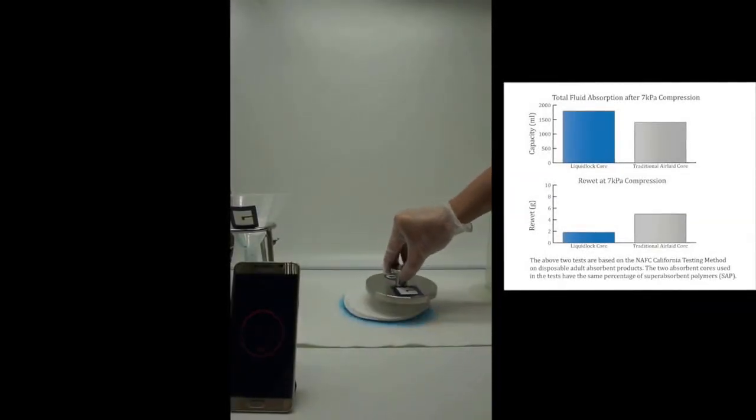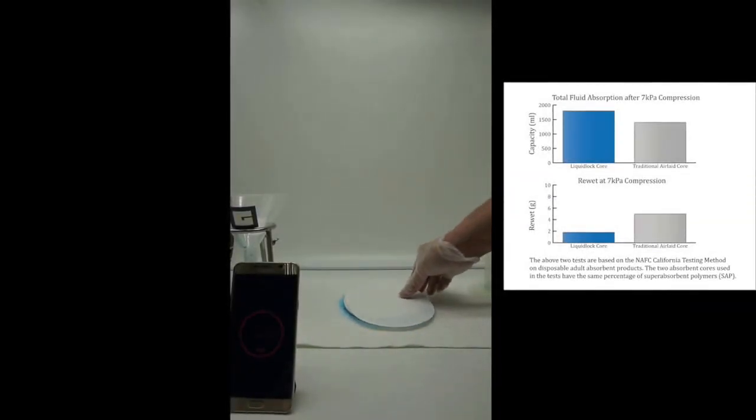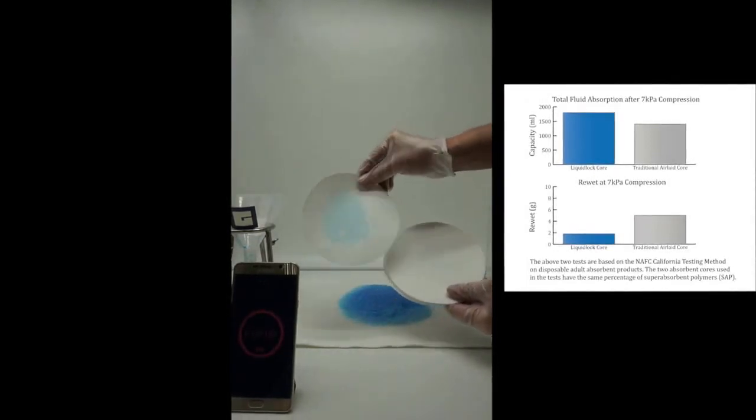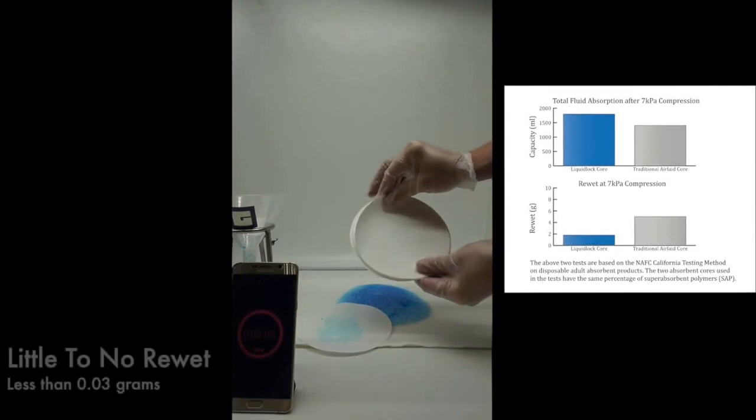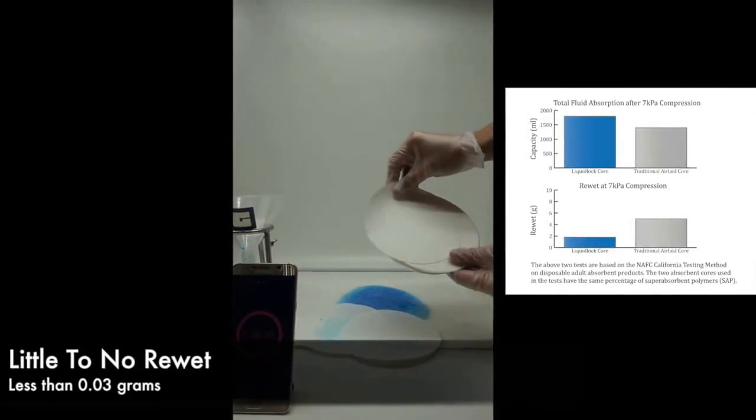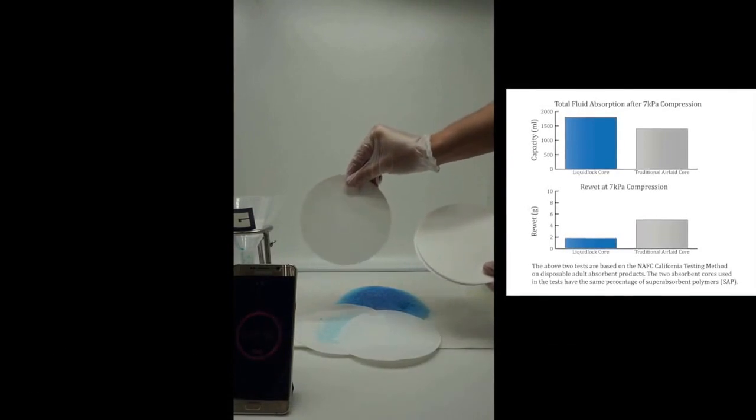Re-wet values under the same compression conditions show up to 150% improvement over traditional air lades. Total fluid absorption under 7 kPa compression under simulated tests like this show improved values of up to 25% over traditional air lades.